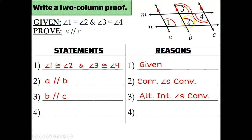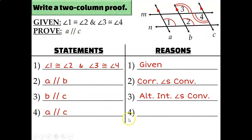So since all three of these lines ended up being parallel — A, B, and C are all parallel — I can state my final proof statement that A is parallel to C, and that would be the transitive property of parallel lines.